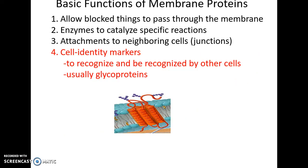Functions of membrane proteins include allowing some things to pass through the membrane — a transmembrane protein can act as a channel for substances that normally cannot pass through. Membrane proteins can also be enzymes that catalyze specific chemical reactions important in the cell membrane, and they can act as attachment sites to connect to neighboring cells.